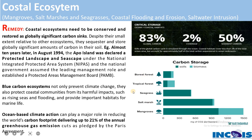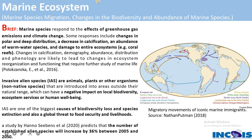You can compare carbon storage across ecosystem types — boreal forest, tropical forest, seagrass, salt marsh, and mangroves. Mangroves store a very high amount — around 900 milligrams of carbon dioxide per hectare — which shows how important they are for storing both carbon and biomass.